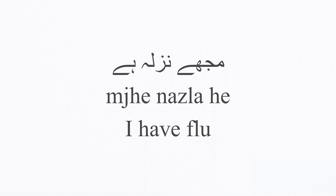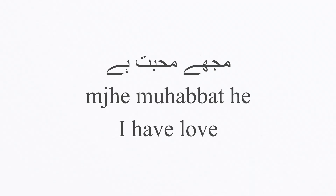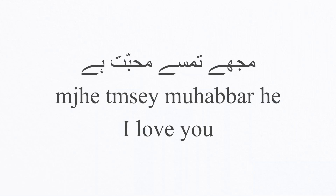Verbs in Urdu and Hindi come at the end of the sentence, but here it's a post-position attached with the subject. 'Mujhe azadi hai' means 'I have freedom.' 'Mujhe muhabbat hai' means 'I have love.' 'Mujhe tumse muhabbat hai' means 'I love you' — or literally, 'I have love for you.'